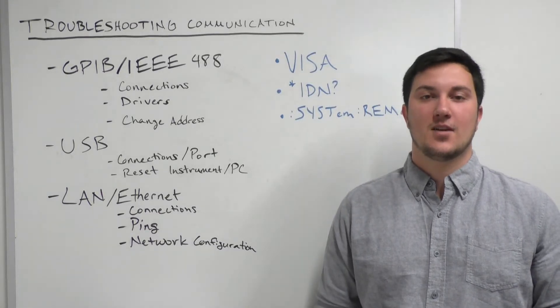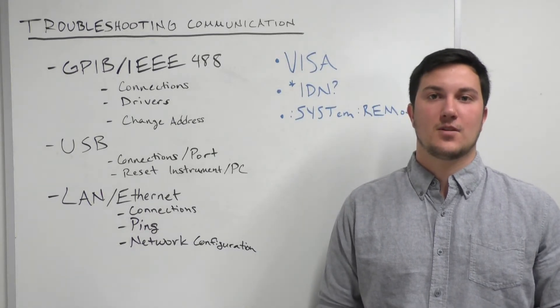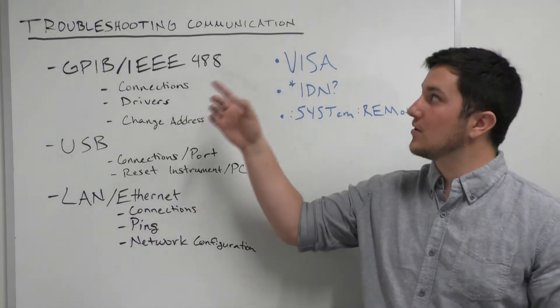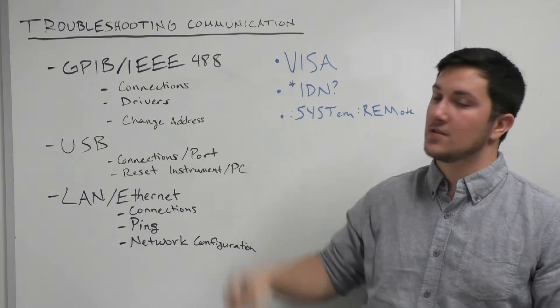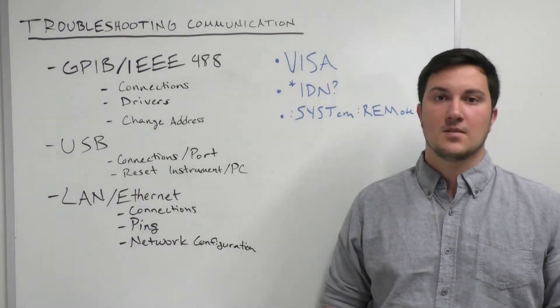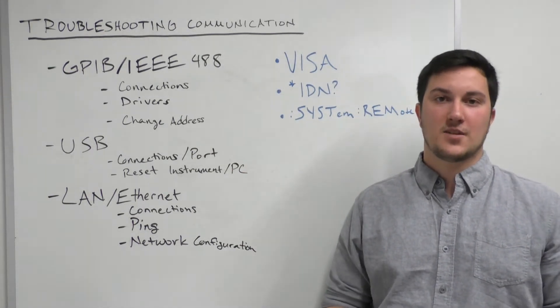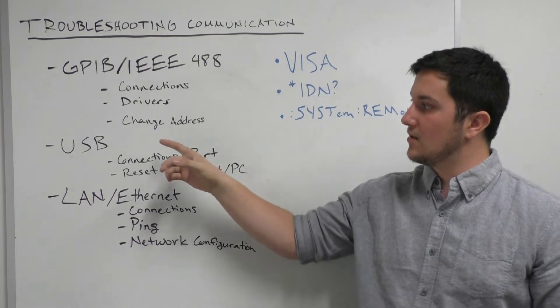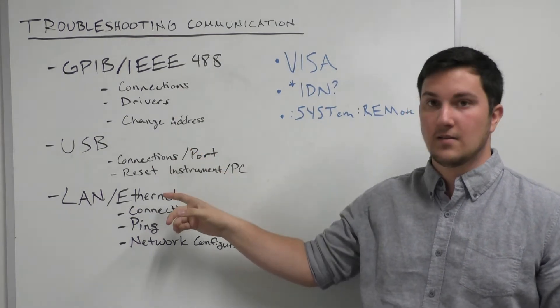Hi, I'm Jake and welcome to Keithley Briefly. Today we'll be talking about troubleshooting remote communications with the measurement instrument. The three interfaces we're going to be talking about today are GPIB, USB, and LAN.